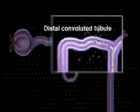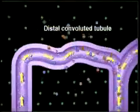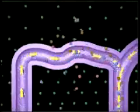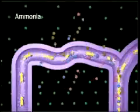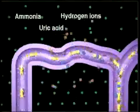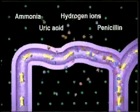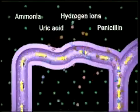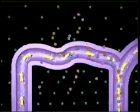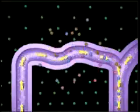In the distal convoluted tubule, secretion occurs. Some wastes — ammonia, uric acid, hydrogen ions, and penicillin — are secreted from blood vessels into the renal tubule.